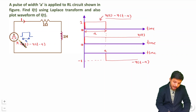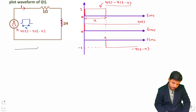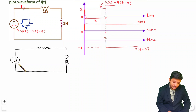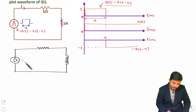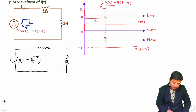We want to find I(t), so first we convert the circuit into the Laplace domain, then calculate I(S), and then apply inverse Laplace to get I(t). The source U(t) − U(t − A) in the Laplace domain becomes 1/S minus e^(−AS)/S, using the time-shifting property where a shifted signal is multiplied by e^(−AS).